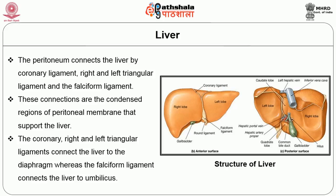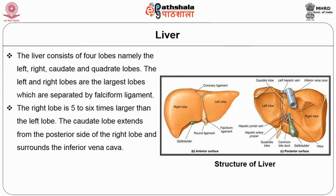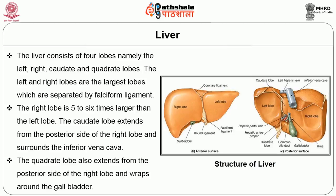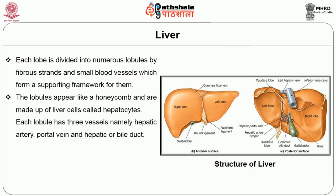The coronary, right and left triangular ligaments connect the liver to the diaphragm, whereas the falciform ligament connects the liver to the umbilicus. The liver consists of four lobes: the left, right, caudate, and quadrate lobes. The left and right lobes are the largest, separated by the falciform ligament; the right lobe is five to six times larger than the left lobe. The caudate lobe extends from the posterior side of the right lobe and surrounds the inferior vena cava. The quadrate lobe also extends from the posterior side of the right lobe and wraps around the gallbladder. Each lobe is divided into numerous lobules, with fibrous strands and small blood vessels forming a supporting framework.